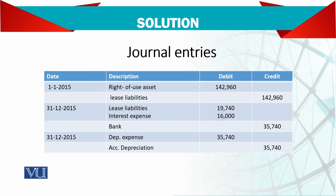The entries in the books of the lessee: debit right-of-use assets 142,960, credit lease liabilities. Then at end of year, debit lease liabilities and interest expense, credit bank account. We also record depreciation expense and accumulated depreciation. Luckily the depreciation figure is the same as the installments because the life is four years, but this won't always be the case. We are using the straight-line method, though the examiner may ask for the reducing balance method, so be careful.